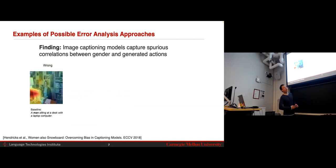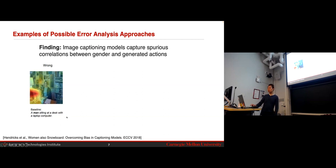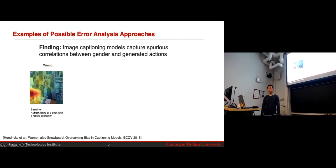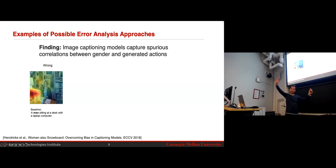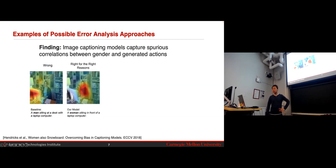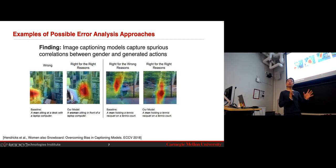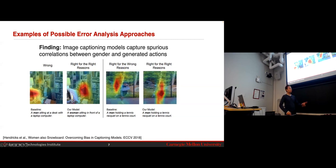Another example falls into the category of looking at what the model is picking up on when making predictions. In an image captioning model, the model takes in an image and generates a caption like 'a man sitting at a desk with a laptop computer' — getting the gender of the person wrong. What these folks found is that if you look at the feature activations with respect to the pixels in the image, the model wasn't actually looking at the person at all; it was only looking at the computer. It inferred the correlation between type of person and the presence of the computer. They subsequently fixed it using attention regularization so the model looks at the right parts of the image when generating each word in the caption. This is what you want to do in a midterm report, inspiring the new method you develop for the final report.